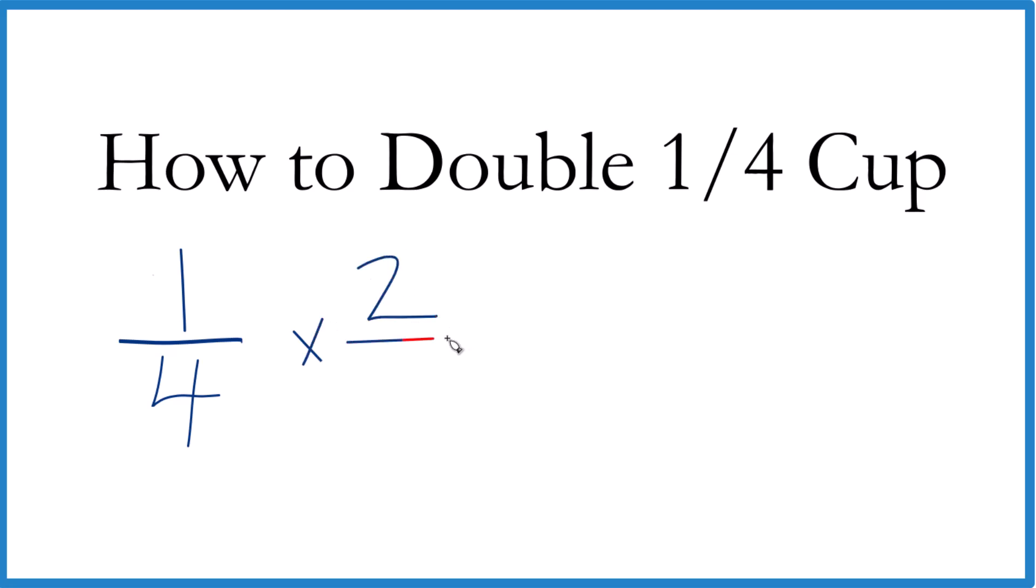And it's helpful to think of this as 2 over 1, so everything lines up. 2 divided by 1 is still 2. And we would say 1 times 2, that's 2. 4 times 1 is 4.